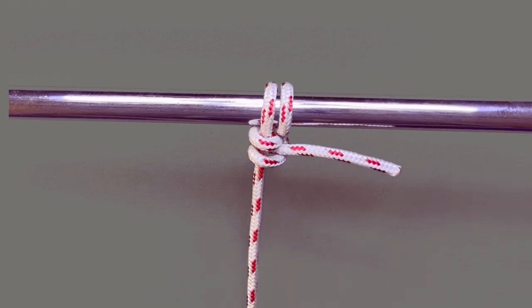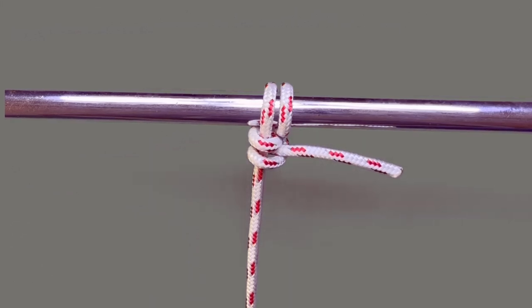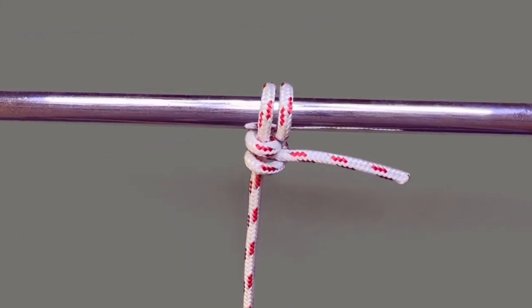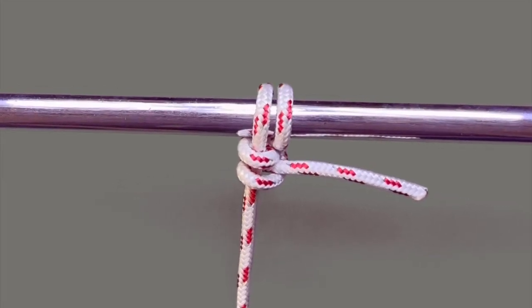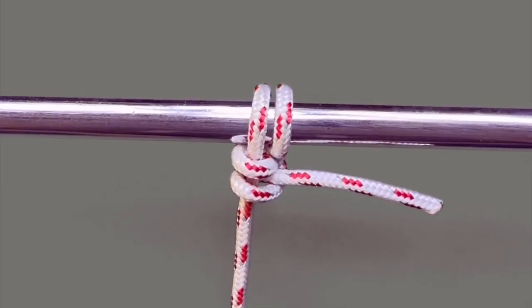That completes today's No Knots demonstration, where we showed you how to tie the round turn with two half hitches. A fantastic option for attaching your fenders to mooring lines for longer stays.